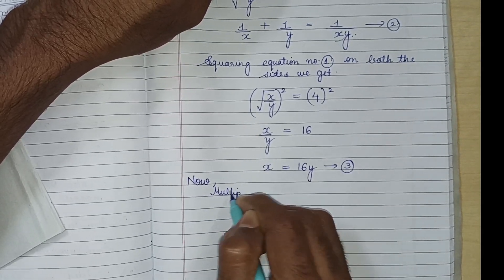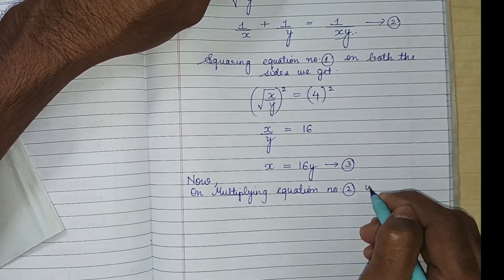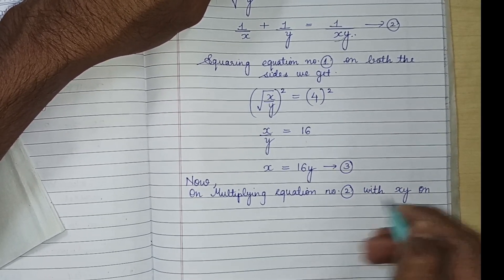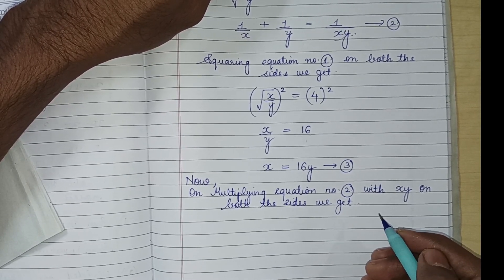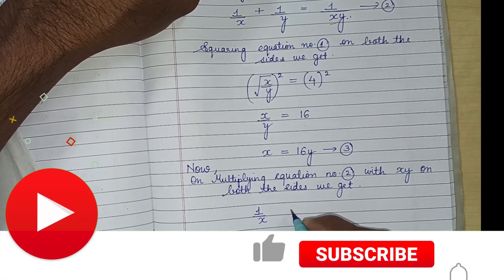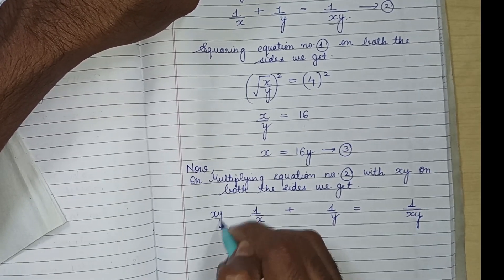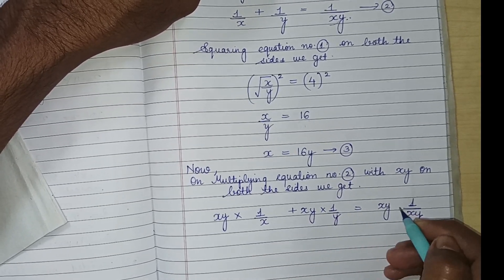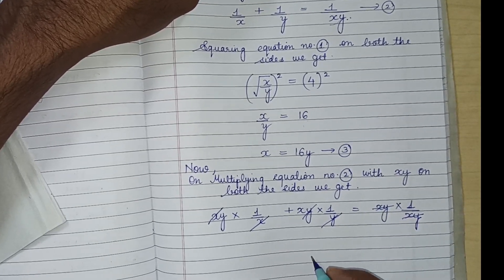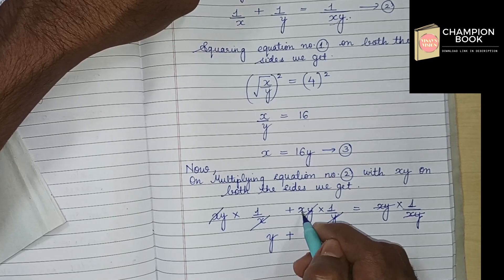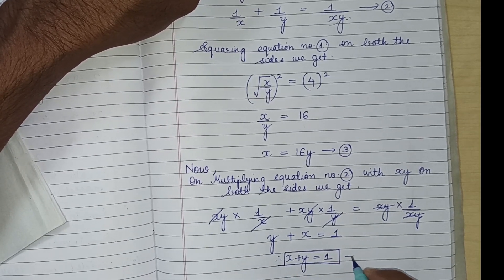On multiplying equation number 2 with xy on both sides, the x and x cancel, and y and y cancel. So y becomes y and x becomes x. We get x plus y is equal to 1. This is equation number 4.